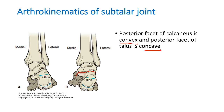During closed kinematic chain, the talus moves on the calcaneum; during open kinematic chain, the calcaneum moves on the talus. During inversion in open kinematic chain, when the calcaneum moves medially, its surface will slide laterally because the posterior facet of the calcaneum is convex. During eversion — movement of the calcaneum laterally — its facet surface will slide medially.